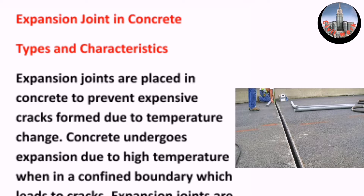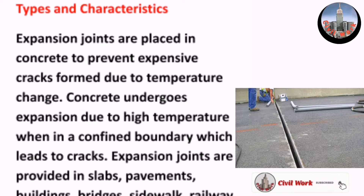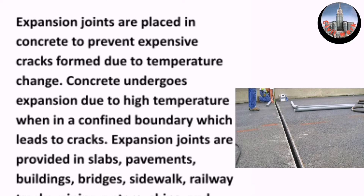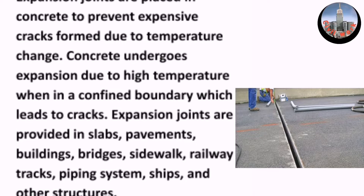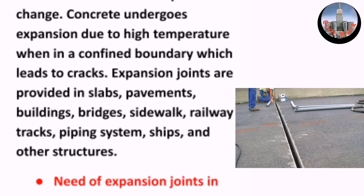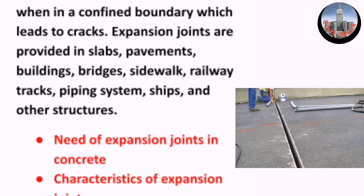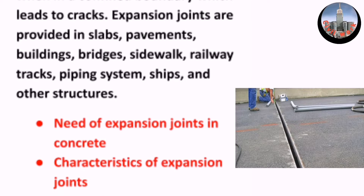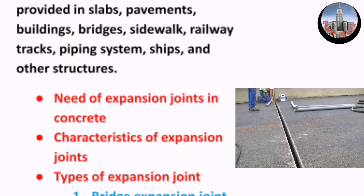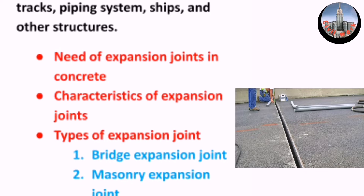Expansion joints in concrete: types and characteristics. Expansion joints are placed in concrete to prevent expensive cracks formed due to temperature change. Concrete undergoes expansion due to high temperature when in a confined boundary, which leads to cracks. Expansion joints are provided in slabs, pavements, buildings, bridges, sidewalks, railway tracks, piping systems, ships, and other structures.